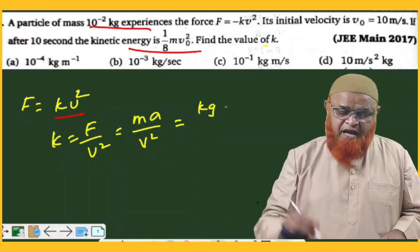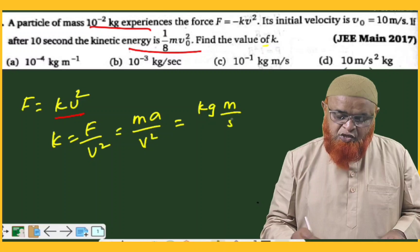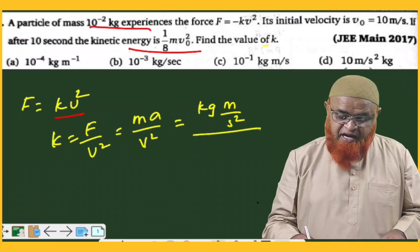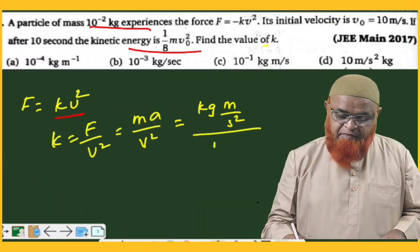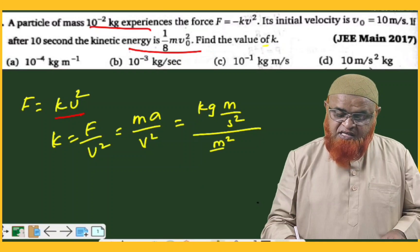But as this is whole square, you can write meter square by second square. So second square gets canceled, meter gets canceled. And what is left? Kg per meter is left.